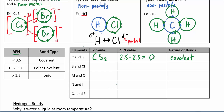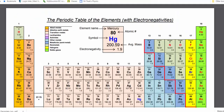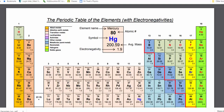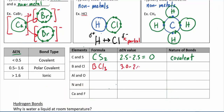Compare that to boron and chlorine forming BCl₃: chlorine has an EN of 3.0 and boron has 2.0, giving a difference of 1.0. Since 1.0 falls between 0.5 and 1.6, this is a polar covalent bond. That means the chlorine will be slightly negative and the boron slightly positive, since chlorine is more electronegative at 3.0 versus boron's 2.0.